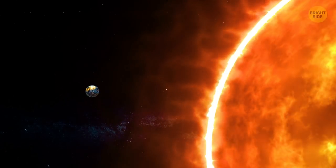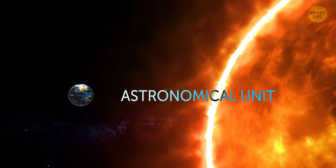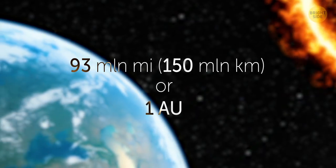The distance between the Sun and the Earth identifies as an astronomical unit. It's exactly 95 million miles, or 1 AU.